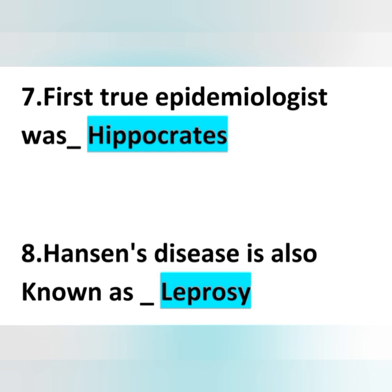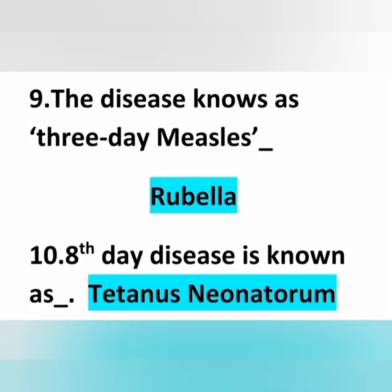The first two epidemiology stories are from Hippocrates. Hansen's disease is also known as leprosy. The disease also known as three-day measles is rubella, and eighth-day disease is also known as tetanus neonatorum.